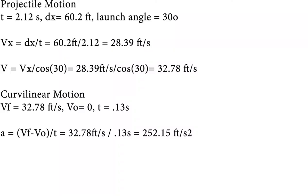For calculations, we started off with projectile motion. We were able to use the distance and time to solve for the velocity at launch to be 32.78 feet per second. Then we move on to our curvilinear equations, where our acceleration equals the final velocity divided by the time it takes to reach that velocity. We calculated our curvilinear acceleration to be 252.15 feet per second squared.